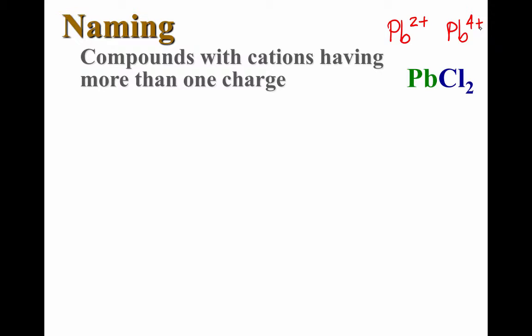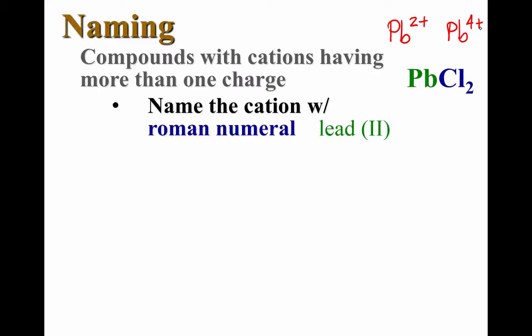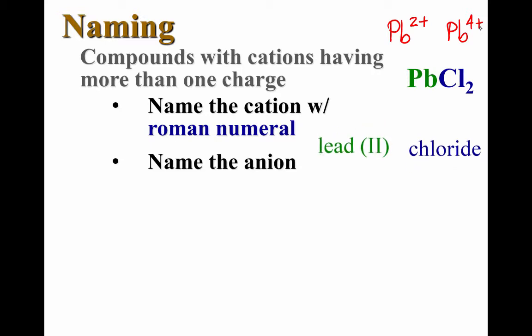So we need to be careful when we name this. The name of this particular cation is lead two. The name of the anion again is chloride. Notice that we've changed the ending to IDE. So the compound is called lead two chloride. Now how did I know this was lead two and not lead four?